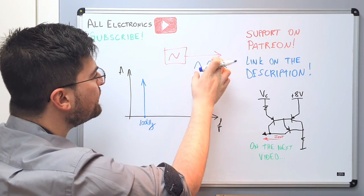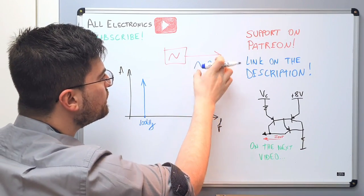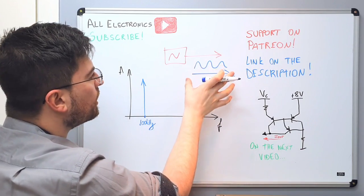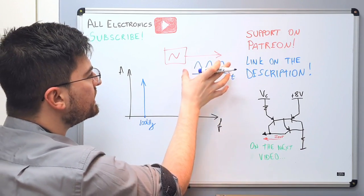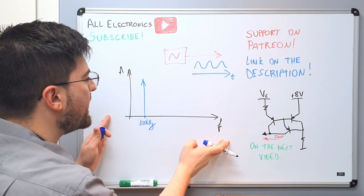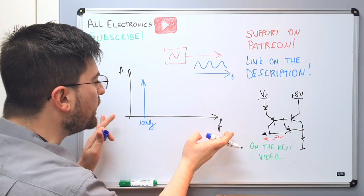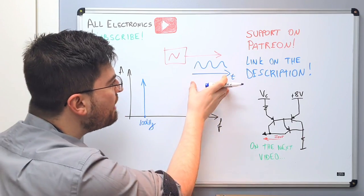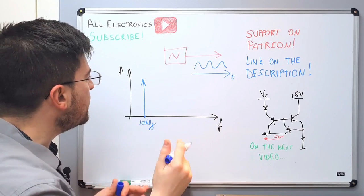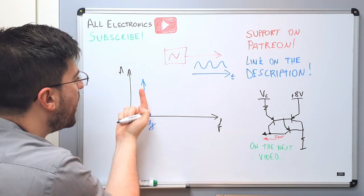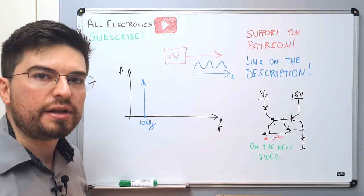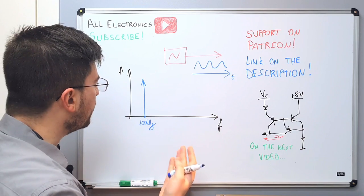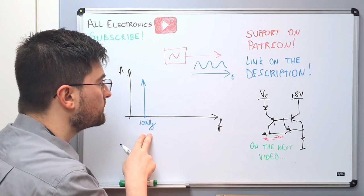If we take a very clean signal from the time domain — here we have time — and we take a look at the same signal from the frequency domain, from the frequency perspective, if the signal is very clean we expect to see only one tone at the main frequency of the signal. In this case the main frequency is 100 kilohertz. This picture I draw here is from an ideal oscillator.